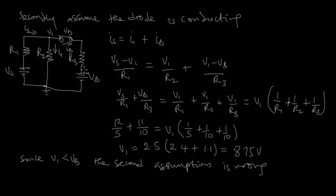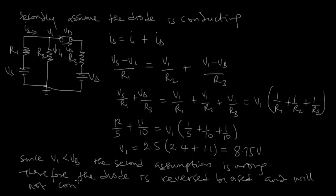Since Vb is higher than V1, current cannot flow in that direction. It will flow in the opposite direction. Therefore, the diode is reversed biased and will not conduct current.